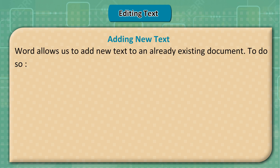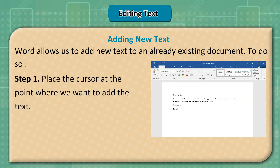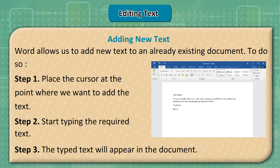Adding New Text: Word allows us to add new text to an already existing document. Step 1: Place the cursor at the point where we want to add the text. Step 2: Start typing the required text. Step 3: The typed text will appear in the document.